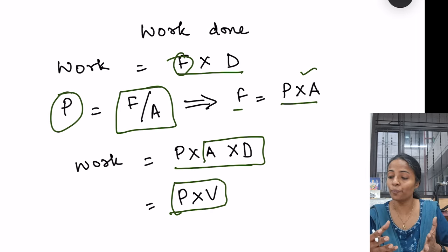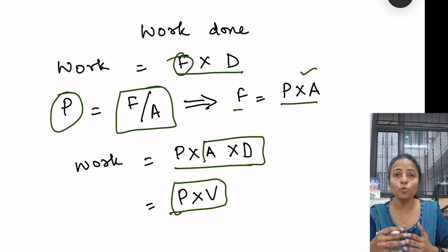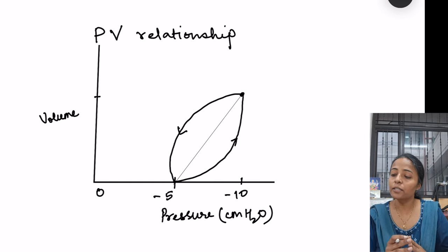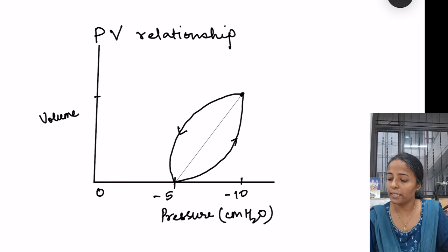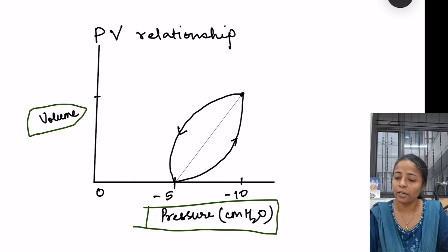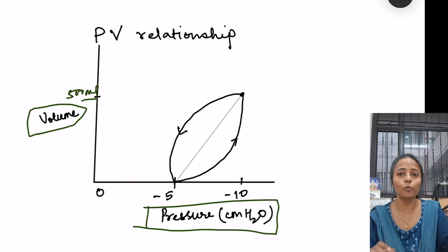In the respiratory system, pressure into volume gives the work done, and we draw a pressure-volume relationship graph — that is the compliance graph. So let us go to see that graph and the components of work done. This graph shows the pressure-volume relationship, with the x-axis showing pleural pressure in centimeters of water and the y-axis showing volume change in the lungs, from 0 to 500 ml — we are talking about tidal volume here.